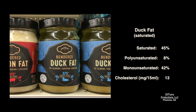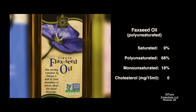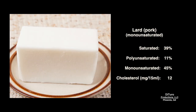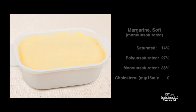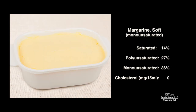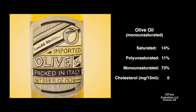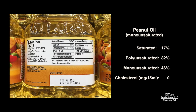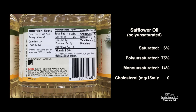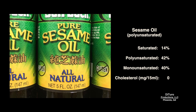Duck fat is a saturated fat, but also has 42% monounsaturated fat, making it partially solid at room temperature. Flaxseed oil is a polyunsaturated fat at 68%. Lard is a monounsaturated fat that's solid at room temperature. Soft margarines are about 63% mono and polyunsaturated fats. Hard margarine is slightly higher in saturated fat compared to soft margarines, but the predominant fat is still monounsaturated. Olive oil is one of the leading monounsaturated oils. Peanut oil is almost 80% poly and monounsaturated. Safflower oil has one of the highest percentages of polyunsaturated fat. Sesame oil is borderline poly and monounsaturated.